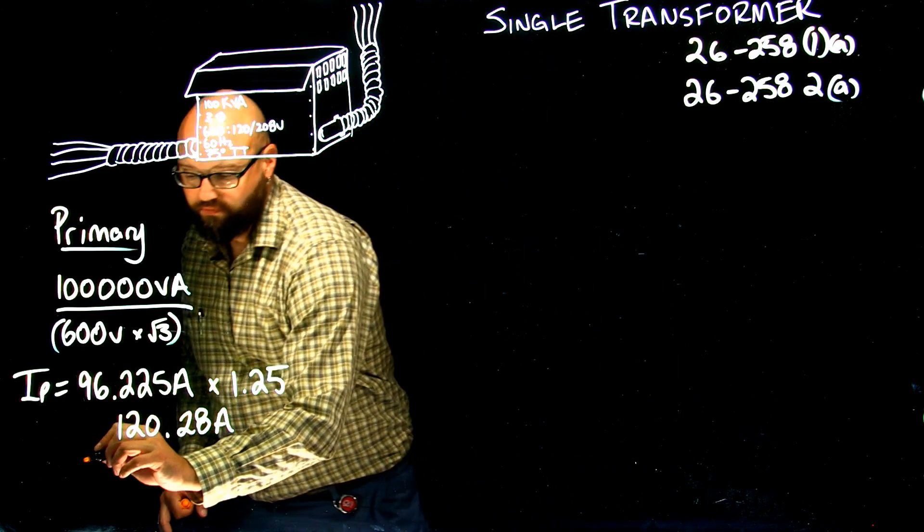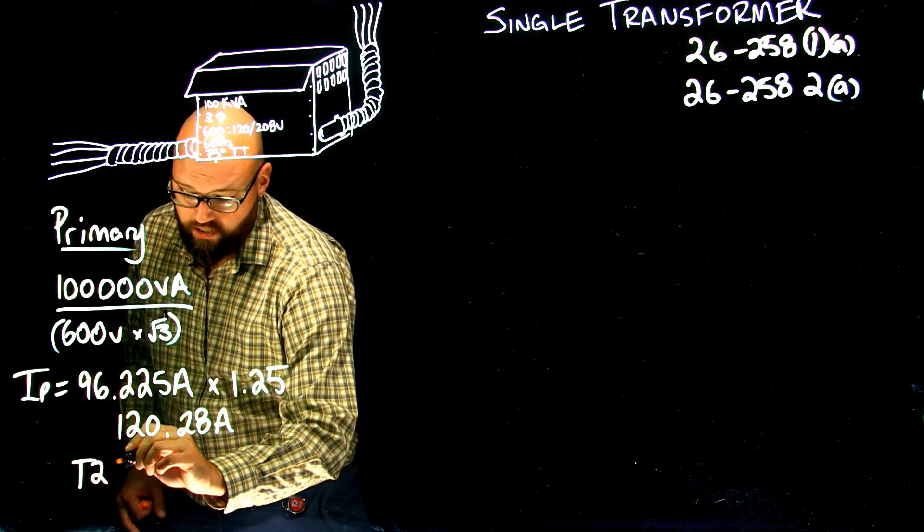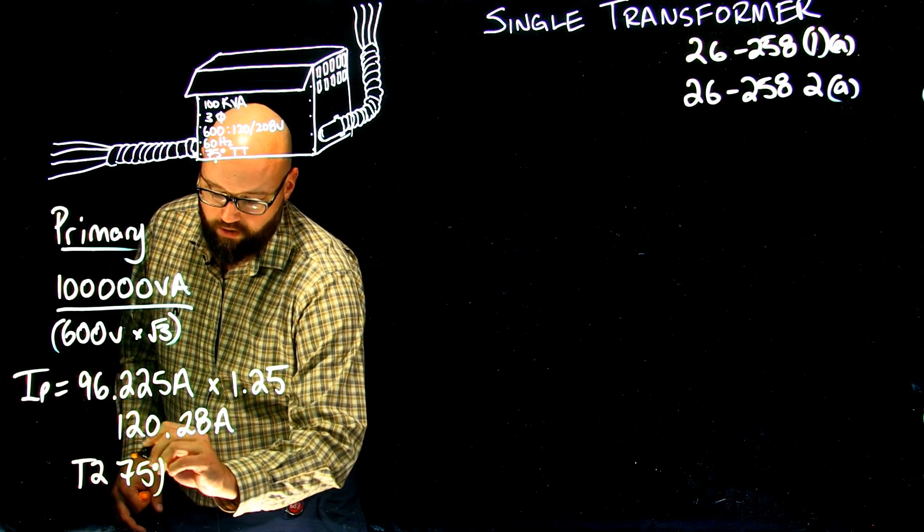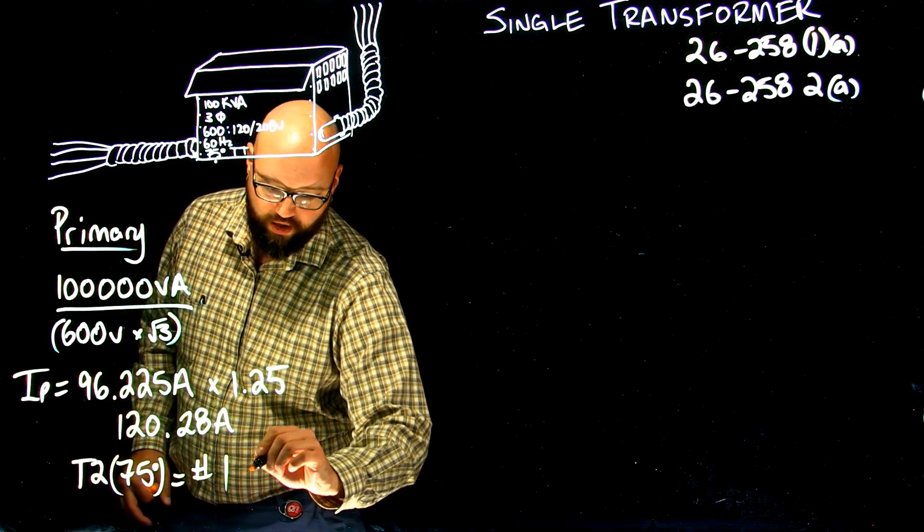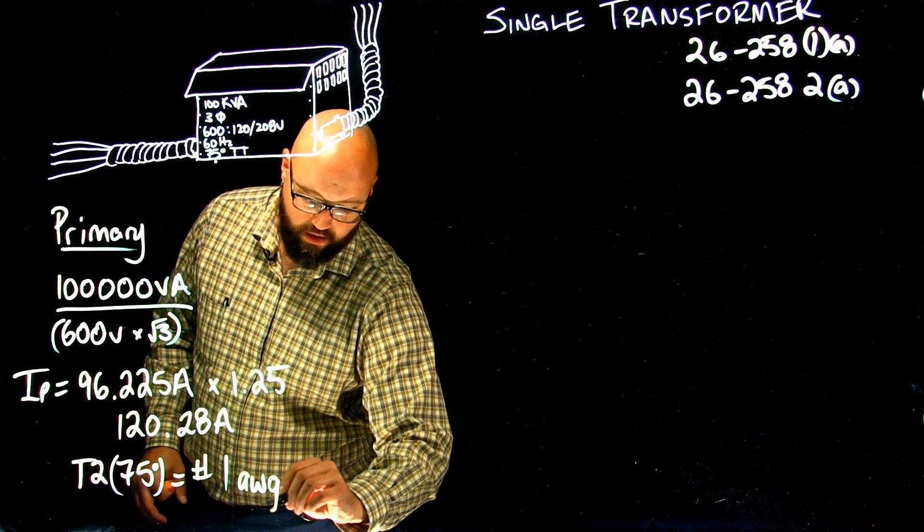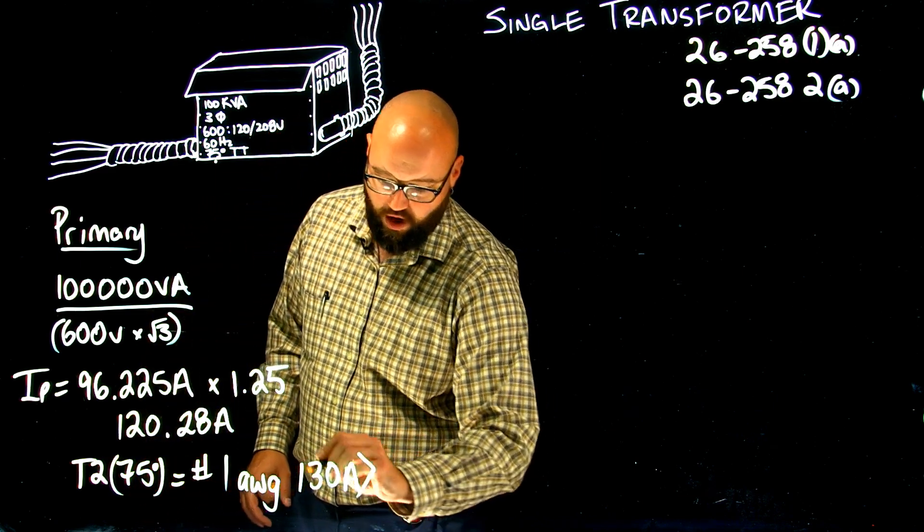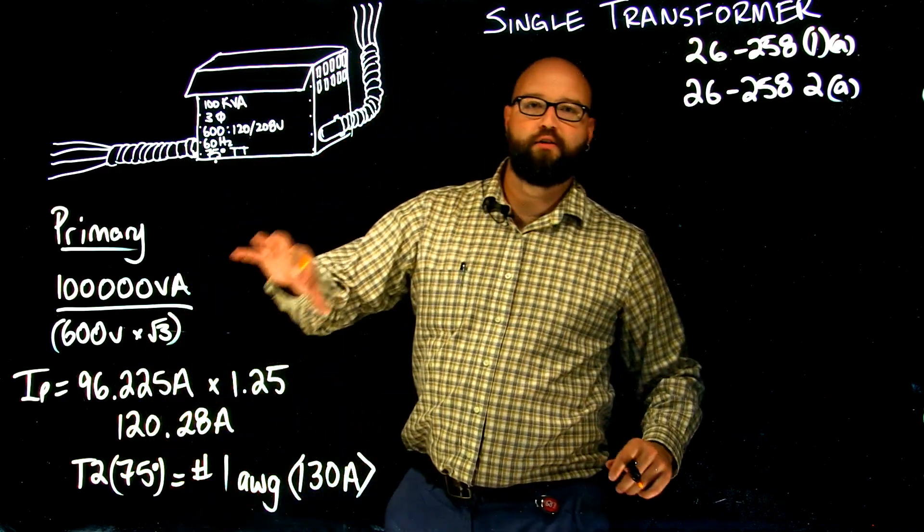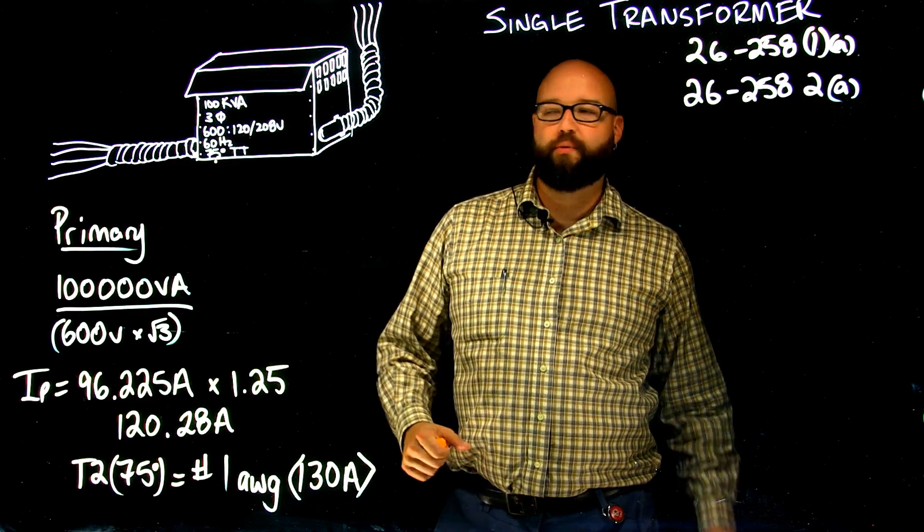So, we're going to go to table 2, and because of 75-degree termination, we're going to go in the 75-degree column. We're going to choose a number 1 gauge conductor with an ampacity of 130 amps. There's our primary conductors feeding the primary side of our transformer.